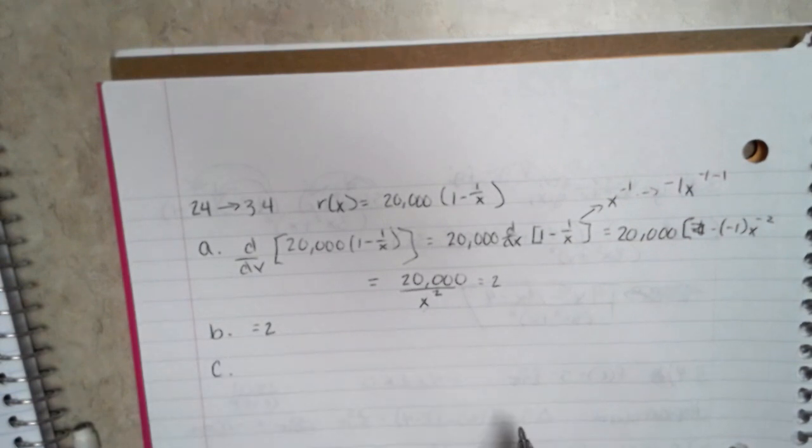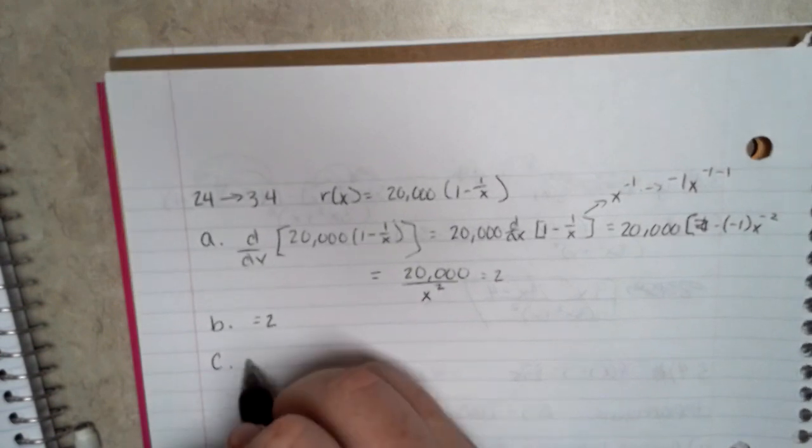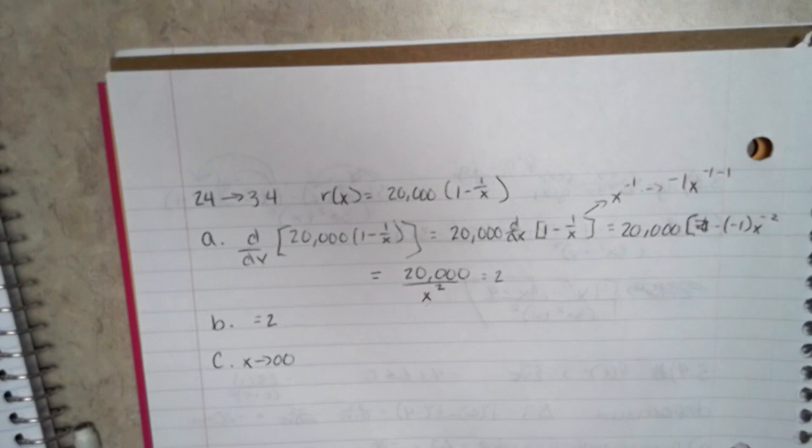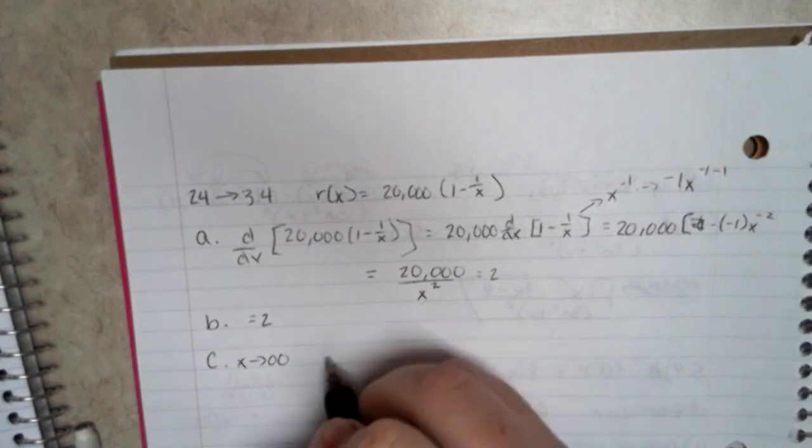And then with part C, it's asking: find the limit of r'(x) as x approaches infinity and how would you interpret this number? So the limit of r'(x) as x approaches infinity is 0.